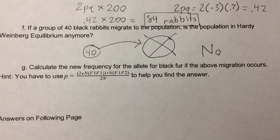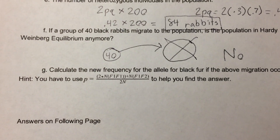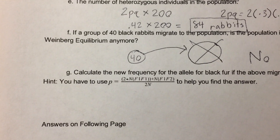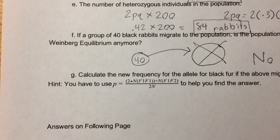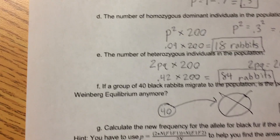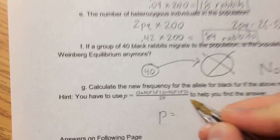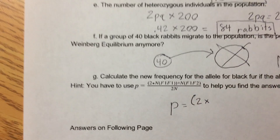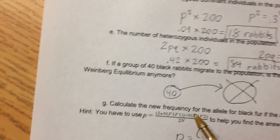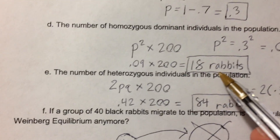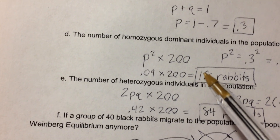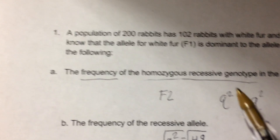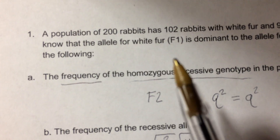G, calculate the new frequency of the allele for black fur if the above migration occurs. You have to use the formula: P equals 2 times the number of individuals with the F1F1 genotype, plus the number of individuals with the F1F2 genotype, divided by 2 times the total population. The number of F1F1 individuals was given to us as 18 rabbits, corresponding to the homozygous dominant individuals, P squared, with genotype F1F1, since white fur is the dominant allele.